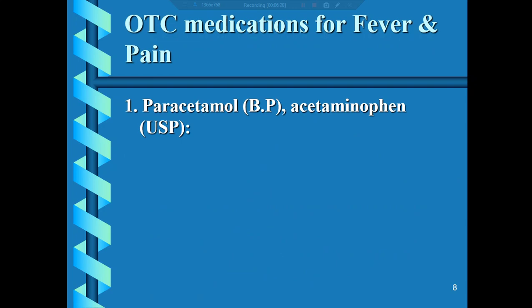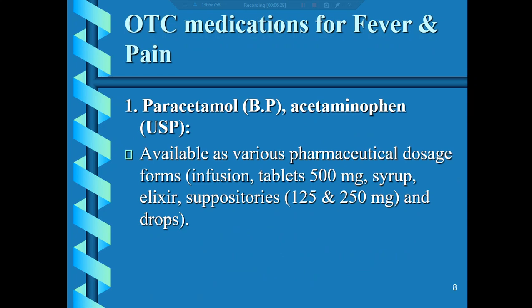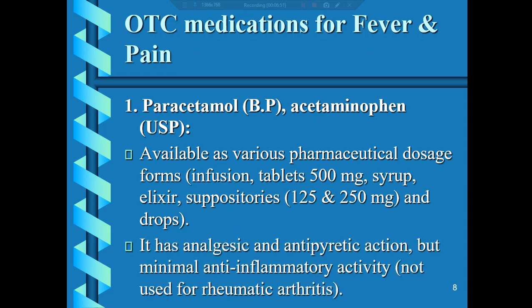The first drug is paracetamol (British Pharmacopoeia) or acetaminophen (United States Pharmacopoeia). It is available in various pharmaceutical dosage forms including infusion, tablets 500mg, syrup, elixir, suppositories, and drops. Suppositories are available in two concentrations: 125mg and 250mg. Paracetamol has analgesic and antipyretic action but minimum anti-inflammatory activity, so it is not used for treatment of rheumatic arthritis.